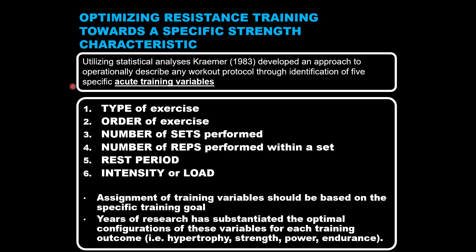The way you resistance train can dictate how strength development is expressed. Resistance training programs must be modified according to the desired strength attribute. Years of exercise science research have shown that manipulation of modifiable or acute training variables can influence the type of strength characteristic one achieves. The modifiable or acute training variables shown to impact strength development are: type of exercise, order of exercise, number of sets and reps together making up volume, rest period, and intensity or load.